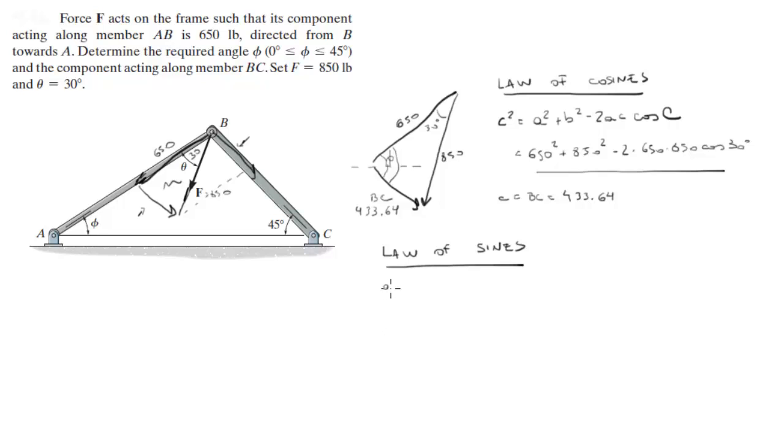The law of sines states that a over sine of angle a is equal to b over sine of angle b, which is equal to c over sine of angle c.